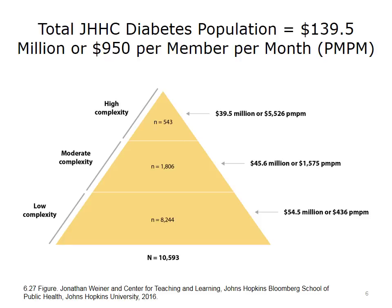The highest risk individuals use a large amount of services. A total of $139 million of cost is expended by a relatively small group of 10,500 individuals. It shows the per-member-per-month (PMPM) breakdown in costs of individuals at each level of the pyramid. So 543 individuals in this cohort who have diabetes and are also highly complex actually cost the system $39 million over the year, or over $5,500 per month per patient.